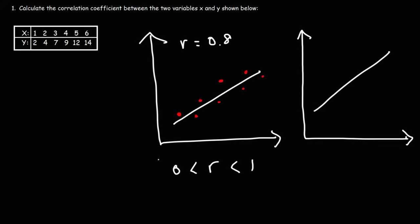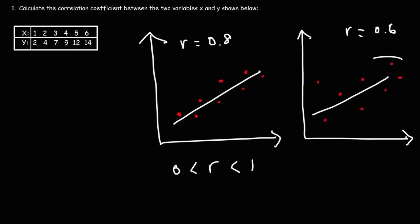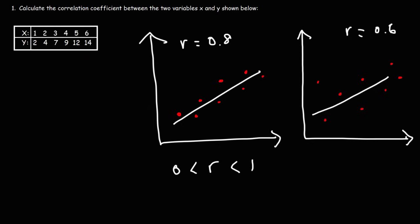Whereas if you have a similar line but the points are more scattered about that line, the r value will be less — it might be 0.7 or 0.6. The closer that the points are next to the line, r is going to be closer to one. And if the points are further away from the line, r is going to be closer to zero.